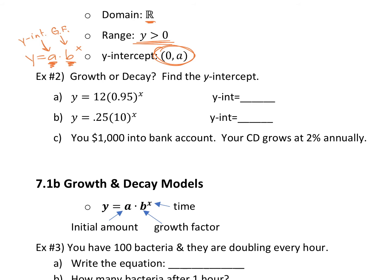We're working from y equals a times b to the x power — b is your growth factor, a is your y-intercept. Would you say letter A there is a growth or decay model? Decay. This number — 0.95 — is between zero and one. Think of it like a percent: 95% of something is decaying from the 100% it started as. So this is a decay model. What's your y-intercept? 12. If you plug zero in, 0.95 to the zero power is one, so it's always going to equal whatever's in front.